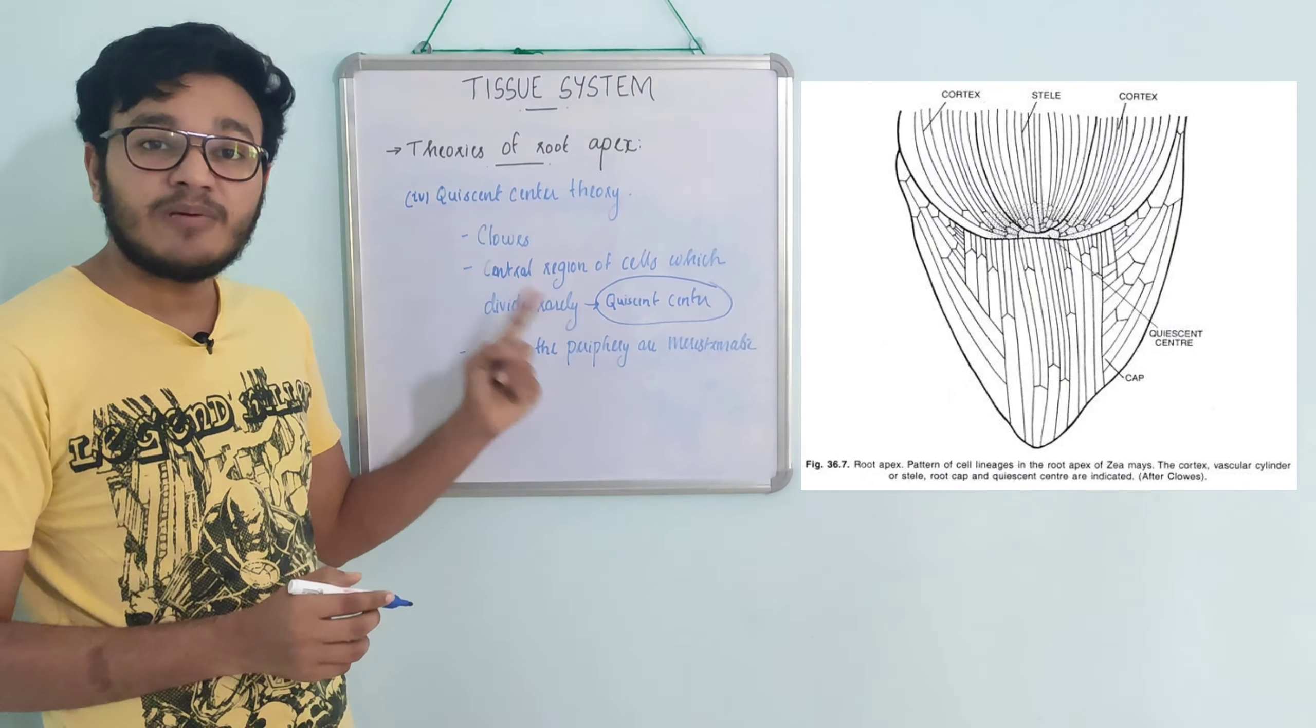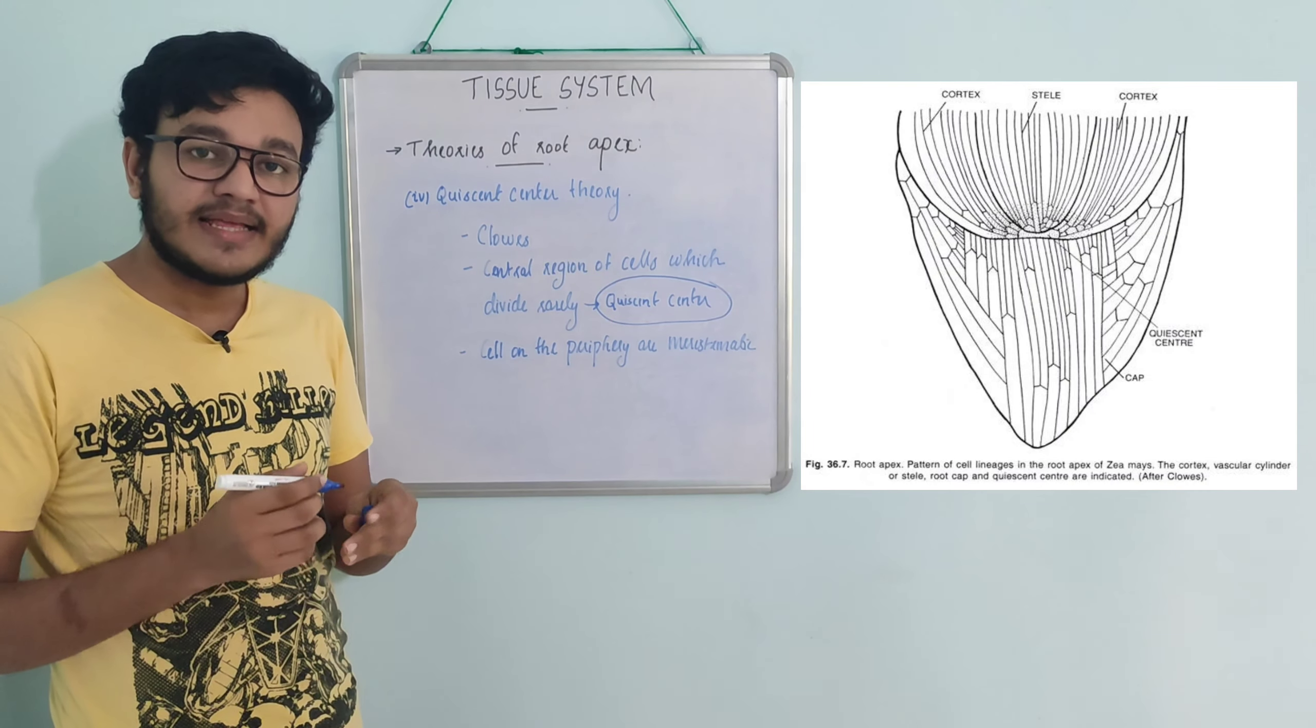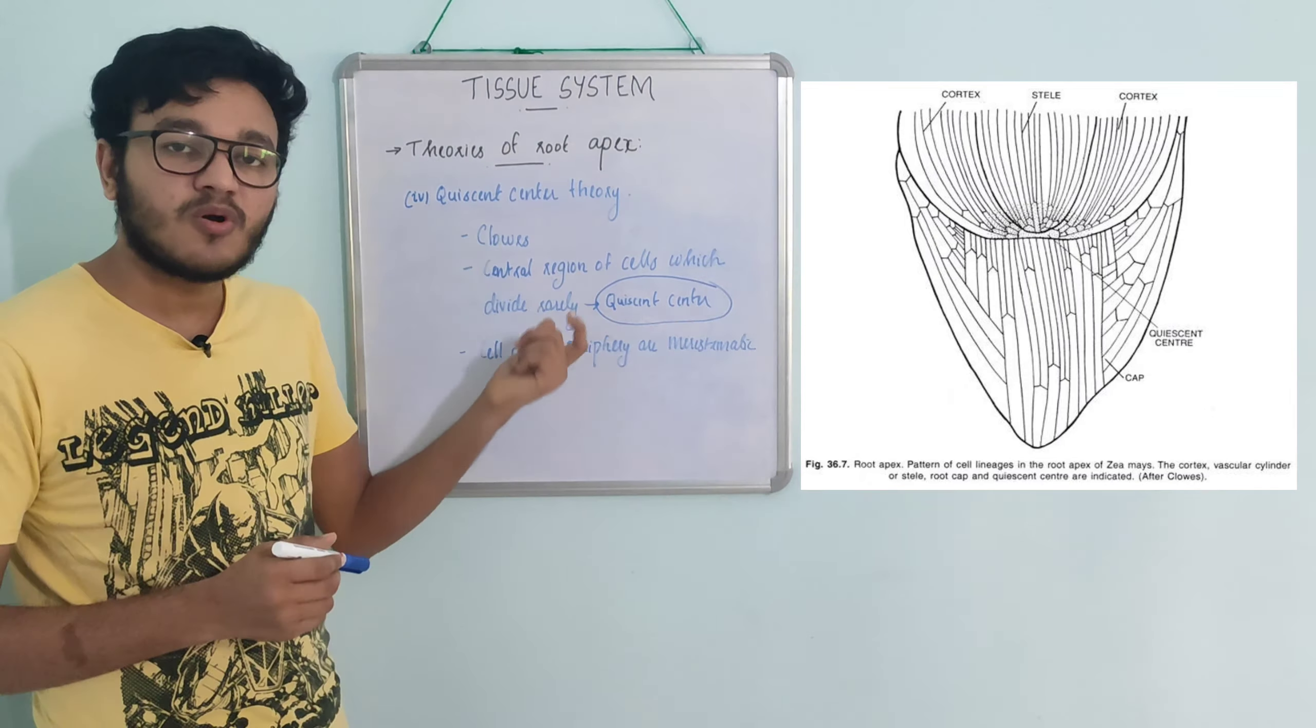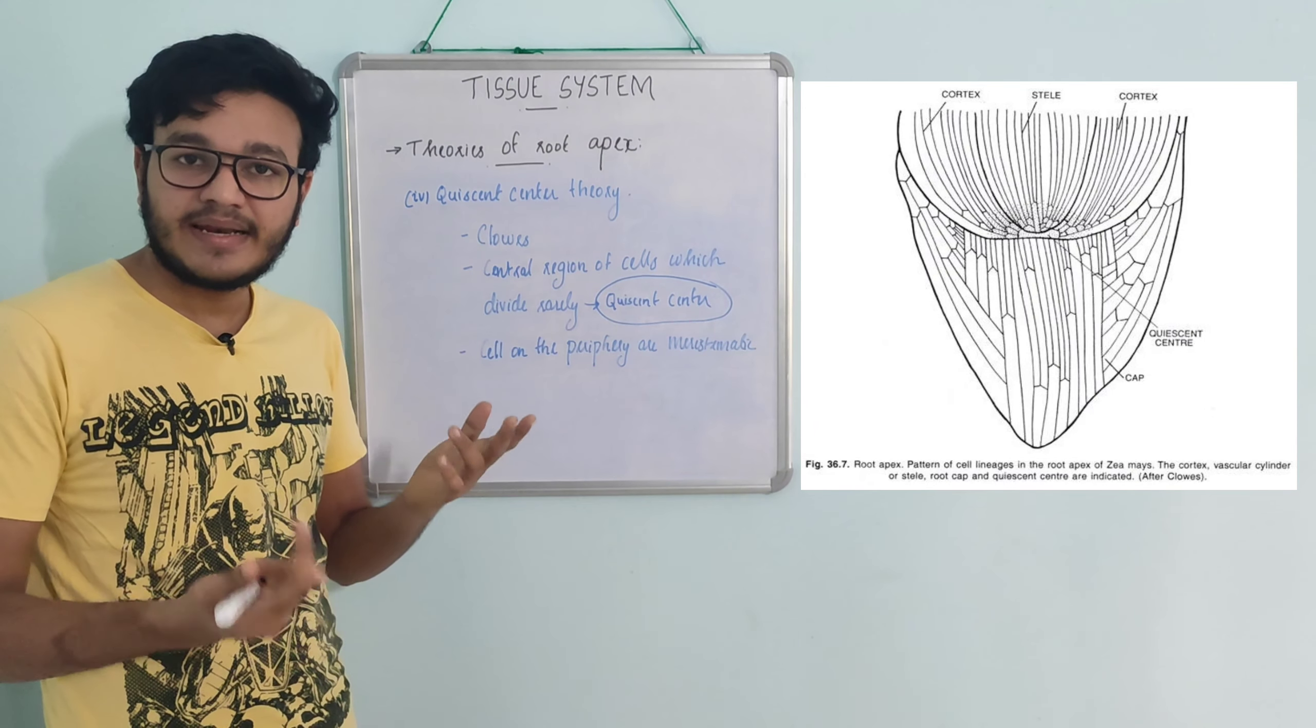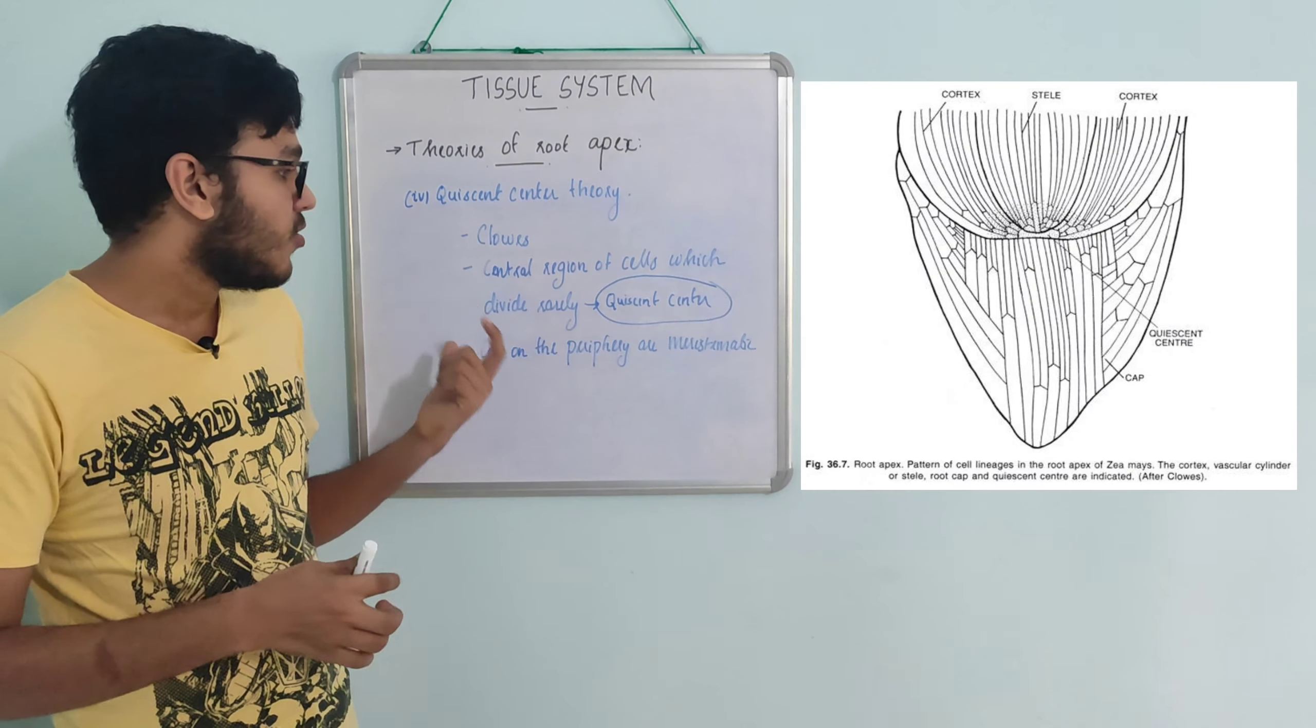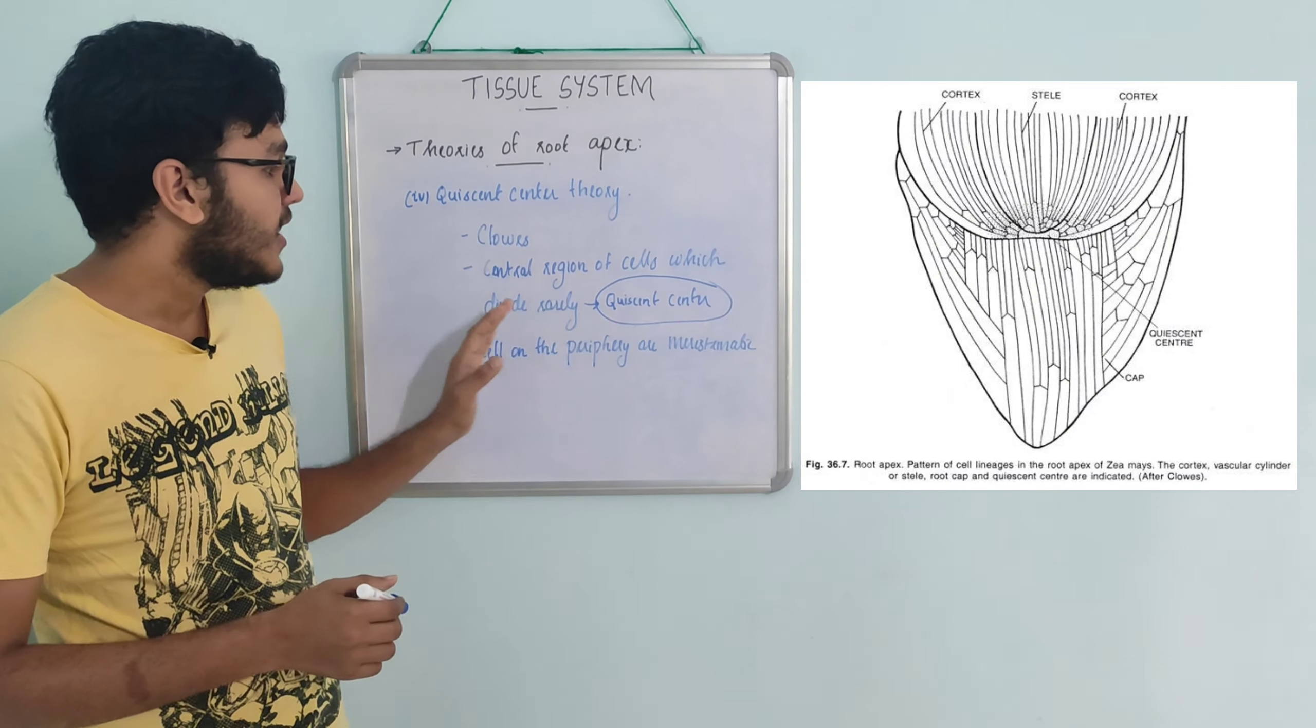The characteristics of the quiescent center include low mitotic division rates, low DNA content, and reduced protein and RNA synthesis. These features distinguish the quiescent center from the actively dividing peripheral cells in the root apex.